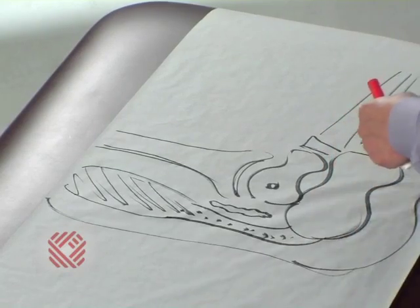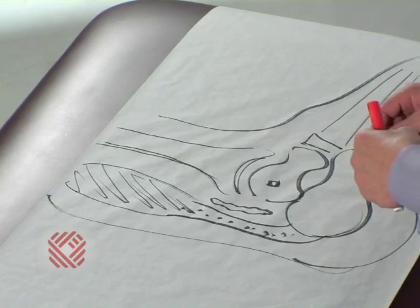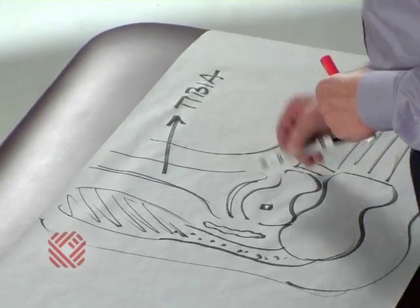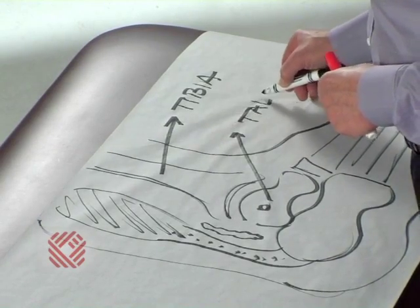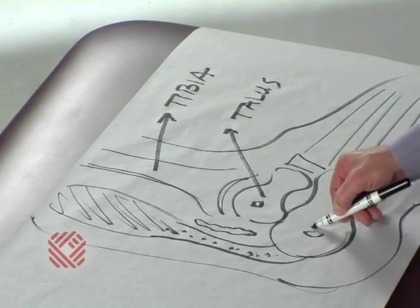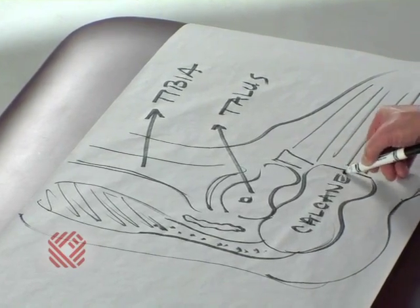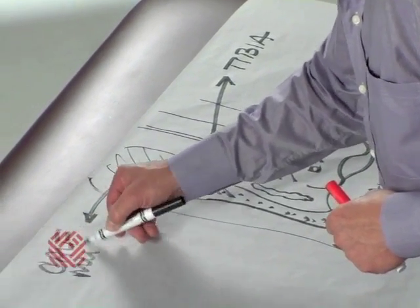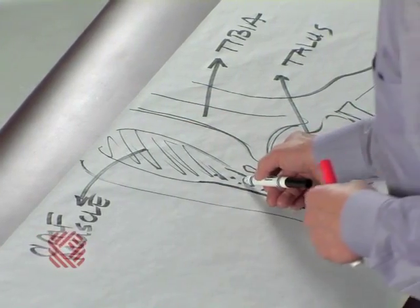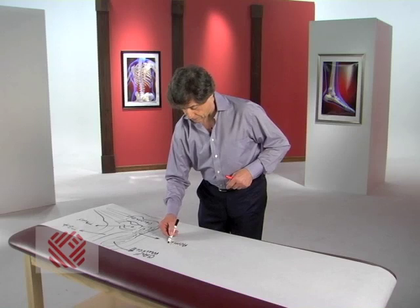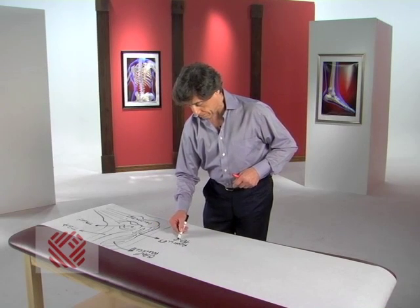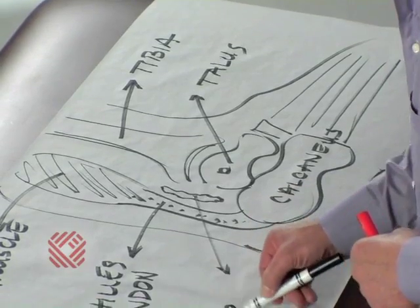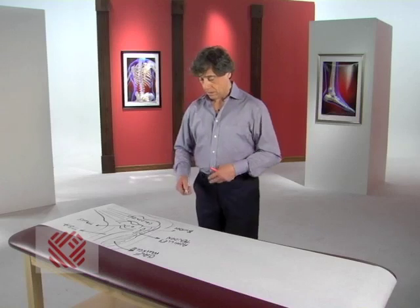Here is the skin of the foot and ankle. So again, we have the tibia leg bone, the talus that it connects to, the talus sitting on top of the heel bone called the calcaneus, the calf muscle in the back, the calf muscle attaching to the heel bone by the Achilles tendon, and in front of the Achilles tendon is the bursa. This is the normal parts list.